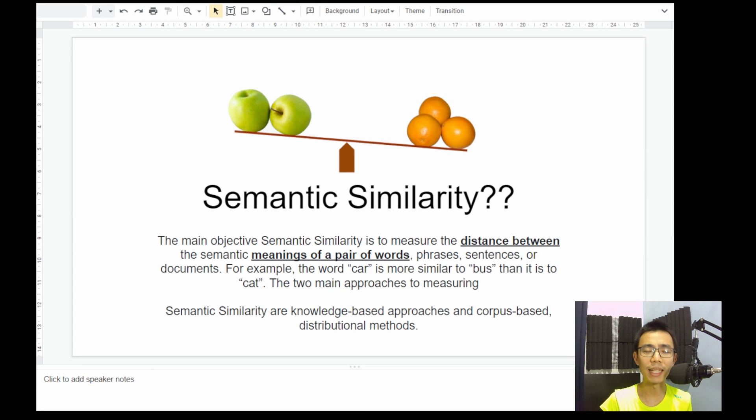So what is semantic similarity? The main objective of semantic similarity is to measure the distance between the semantic meanings of a pair of words, phrases, sentence, or document. So if you have five and six, it's very easy to understand the difference between them and similarity between them.